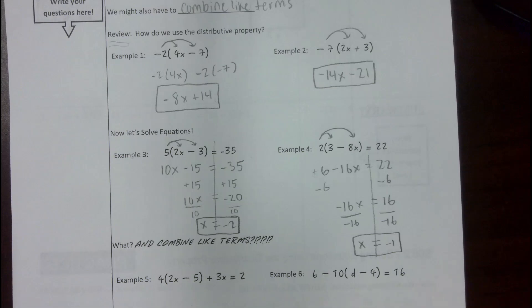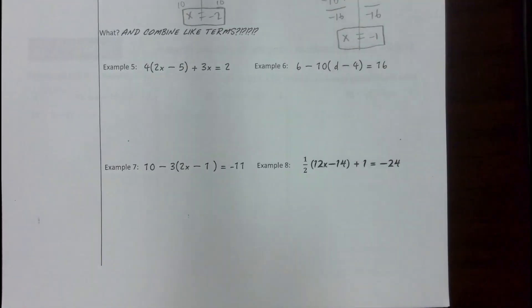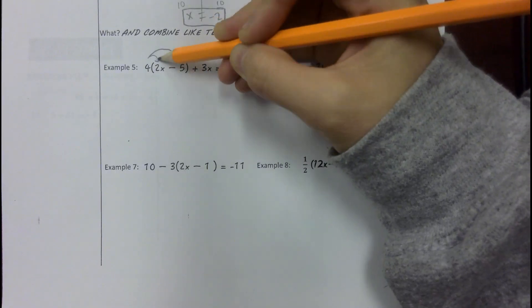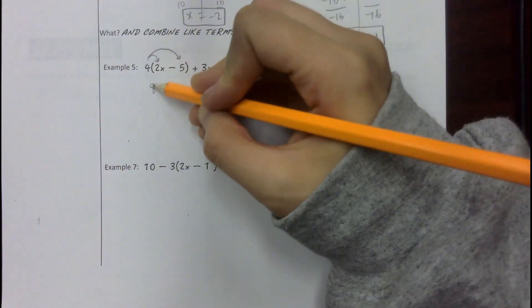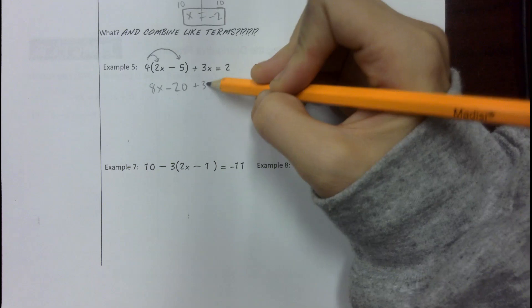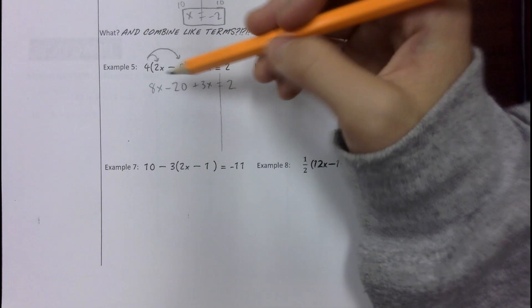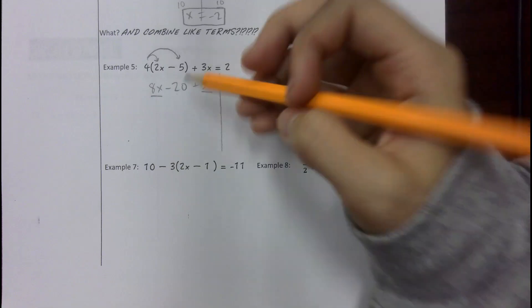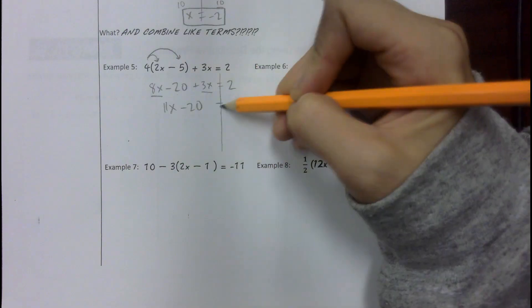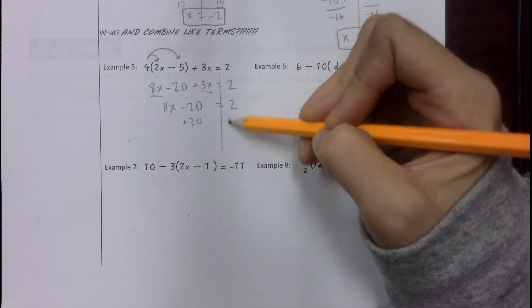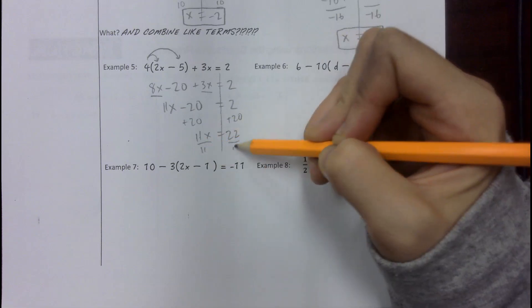Let's do 5 and 6, and then you can do 7 and 8. For number 5, it's like a monster problem — they're just getting worse and worse, but you can do it. We distribute first. Thinking of PEMDAS, multiplication comes before adding and subtracting, so we always distribute first. 4 times 2x is 8x, and 4 times negative 5 is negative 20, and the rest stays the same. Now we combine like terms on this side: 8x plus 3x is 11x minus 20 equals 2. Add 20 to both sides — 11x equals 22. Divide by 11: x equals 2.